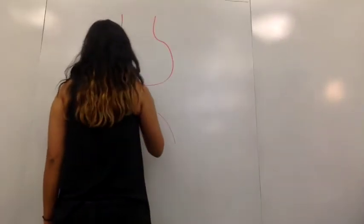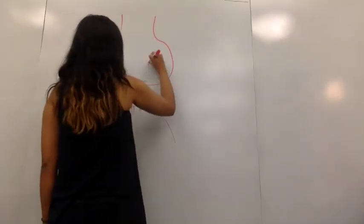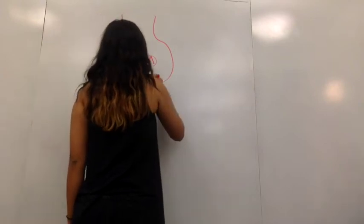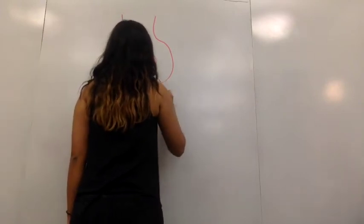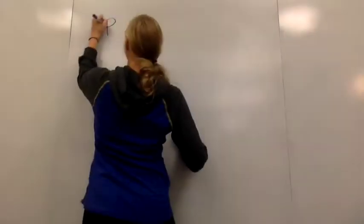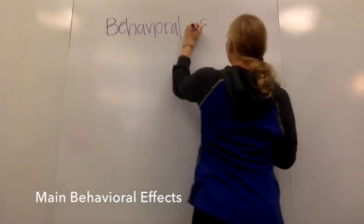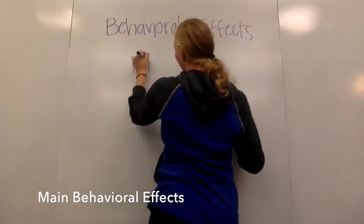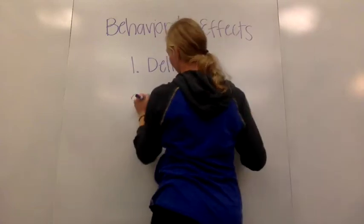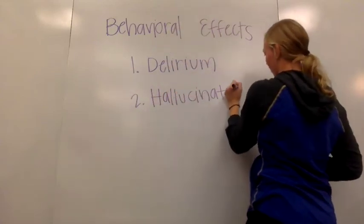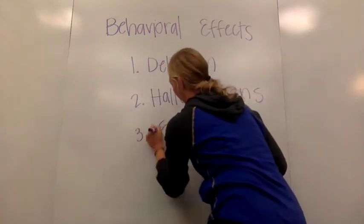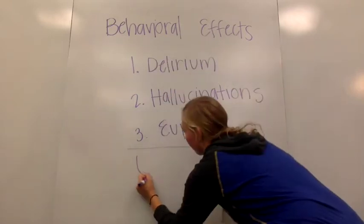As we mentioned before, scopolamine binds to the muscarinic acetylcholine receptors and blocks ACH from binding. As far as behavioral effects go, the three main ones to remember are delirium, hallucinations, and euphoria. The drug's effect on the amygdala and hippocampus cause these behavioral effects.